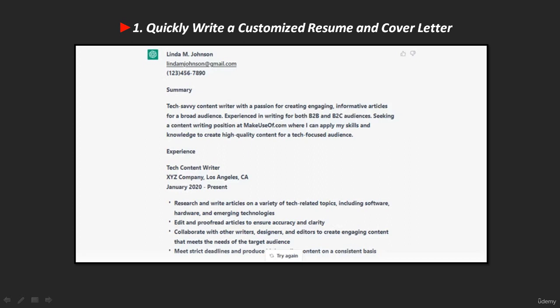Starting from number one: quickly write a customized resume and cover letter. It's challenging to write a resume and cover letter for every job you apply for. Especially if you are currently job hunting, it's nearly impossible to create a unique copy for every job. But you can create a resume online in just a few seconds with ChatGPT, taking away the burden of customizing each resume for every job posting. ChatGPT wrote a technical writer resume, and we also asked it to write a cover letter for a fashion design firm's web developer position.